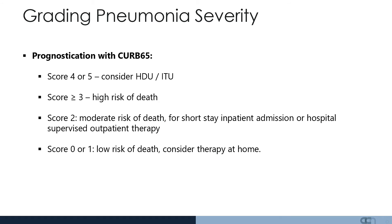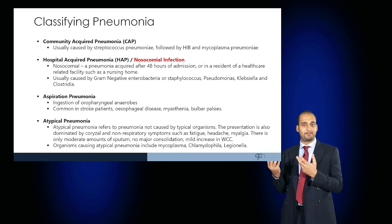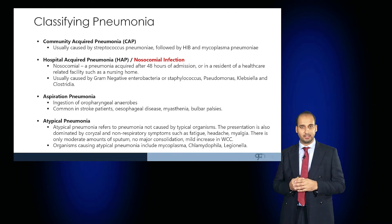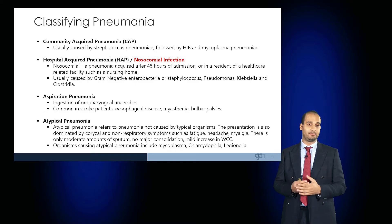We can classify pneumonia as community acquired, which is usually caused by Streptococcus pneumoniae, Haemophilus influenzae, and Mycoplasma, and usually occurs in the community. A hospital-acquired pneumonia or nosocomial infection is a pneumonia acquired after being in a hospital setting or healthcare setting such as a nursing home, after 48 hours of admission. Usually the organisms are more serious — Gram-negative Enterobacteriaceae, Staphylococcus, Pseudomonas species, Klebsiella and Clostridia can cause hospital-acquired infections, and patients can deteriorate more rapidly and require aggressive interventions.